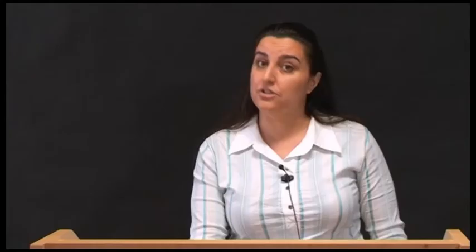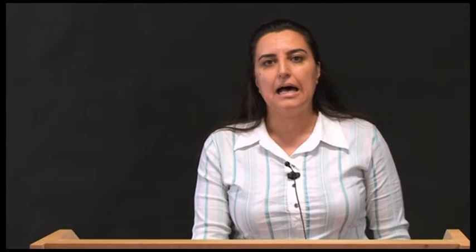I will explain to you how that happens, how we record and how we interpret those recordings. EEG was invented in 1928 by Hans Berger, so quite some time ago, and Hans Berger was actually the first scientist to record electrical activity from the brain from a living human being.